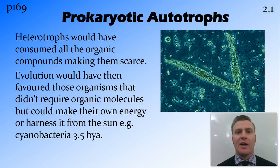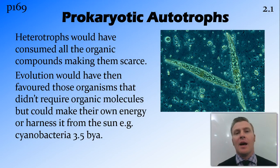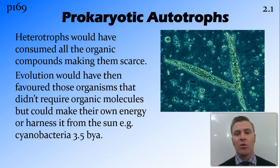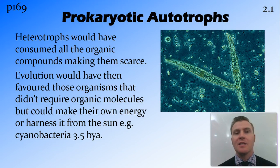As those prokaryotic heterotrophs absorbed all the free amino acids and other organic molecules found in the prebiotic soup, it would create competition between all the different prokaryotes. Once the organic molecules became scarce, they would start looking for other forms of energy. These could come from prokaryotic heterotrophs eating each other, or evolution could favour organisms able to harness energy from the sun to make their own food. The oldest example we have of this is cyanobacteria, or blue-green algae, with fossils found that are 3.5 billion years old.